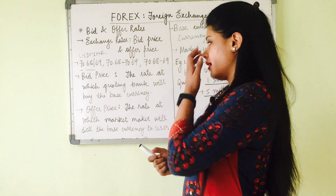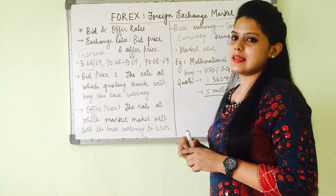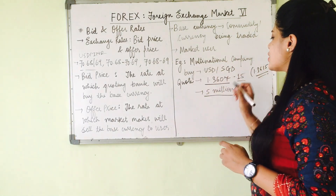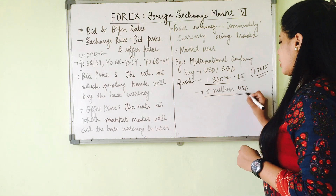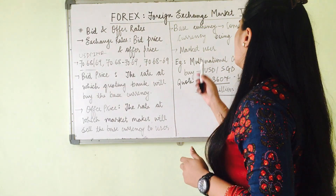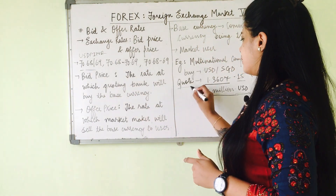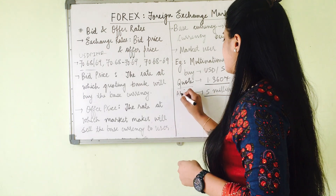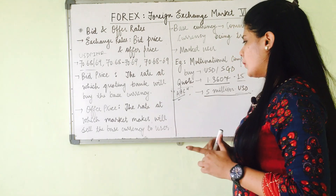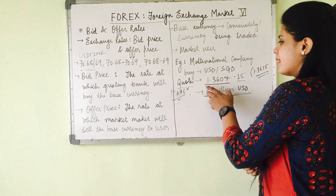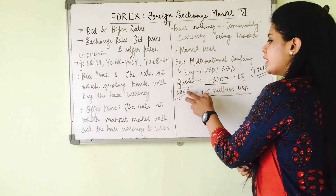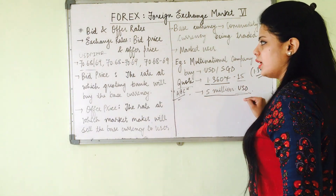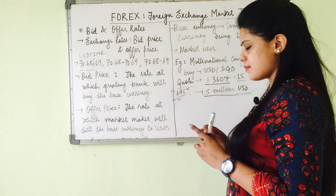Now what is actually a bid price? The bid price is the rate at which the quoting bank will buy the base currency. The base currency is the commodity or currency being traded. In this case, what the multinational company wants is US dollars, so US dollar becomes the base currency. So bid price is the rate at which the quoting bank buys the base currency — in this example, 1.3607 becomes the bid price.